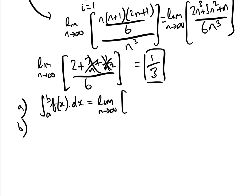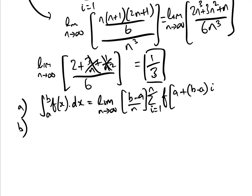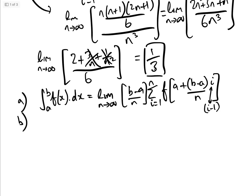The definite integral from a to b of f(x) dx equals the limit as n approaches infinity of (b minus a)/n times the sum from i=1 to n of f(a plus (b minus a)i/n). The second formula is exactly the same except it has i minus 1 instead of i, depending on whether we take the left or right rectangle.